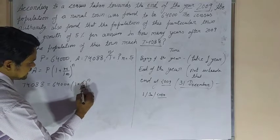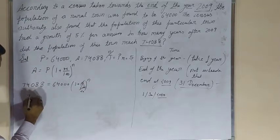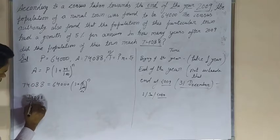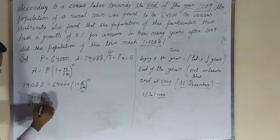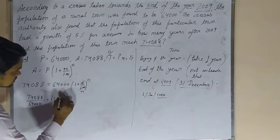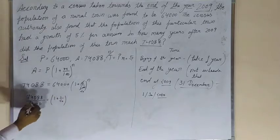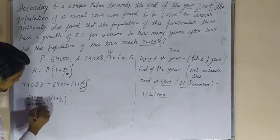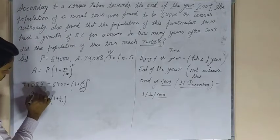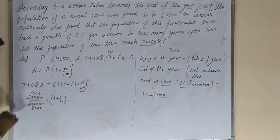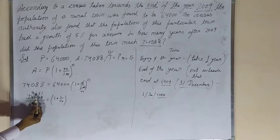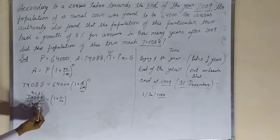This is 20. Now, 74,088 divided by 64,000 equals (1 plus 1 by 20) raised to N. Let's solve this. Simplifying both numbers by dividing by 8, we get 9261 divided by 8000.